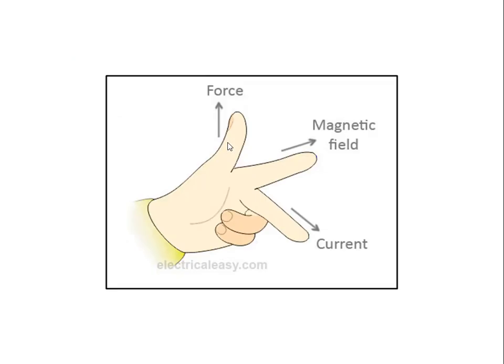Mainly, the left hand rule or thumb rule is for positive charges. But we are going to use the left hand rule. If we are going to find the direction for positive charge, then it will be opposite for negative charge.